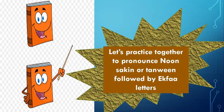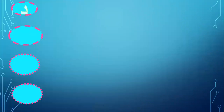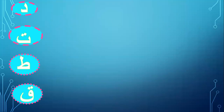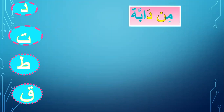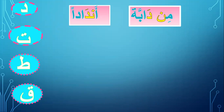Let's practice together how to pronounce Nun Sakinah or Tanween followed by Ikhfa' letters. We will practice four letters from the 15 letters: Dal, Ta, and Qaf. Let's start with Dal. Please repeat after me. The sound of Nun — is it clear or hidden? I say 'An-Dal' — the sound is not clear, it's hidden. Why? Because Nun Sakinah is followed by Dal. Notice that Nun hasn't any vowel — no Fatha, no Dhamma, no Kasra — it has no vowel in the Mus'haf.